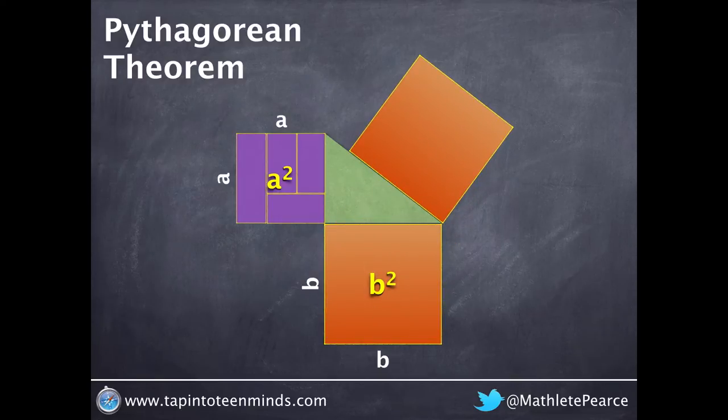So by moving b squared over to the hypotenuse side and then also segmenting a squared into pieces and moving those pieces to wrap around b squared, we can see that a squared plus b squared indeed equals the hypotenuse squared.